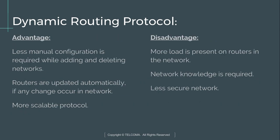The advantages of dynamic routing protocols are: less manual configuration is required as they are configured automatically; routers are updated automatically if any change occurs in the network; and it is a more scalable protocol as adding and deleting devices is easy. The disadvantages are: more load is present on the router since it performs routing itself; network knowledge is required before doing routing; and it is a less secure network since routing is done automatically by the routers.